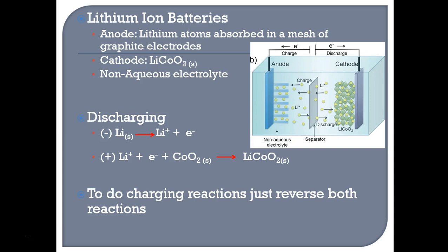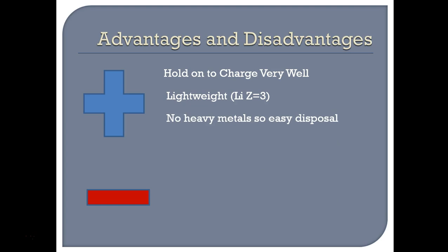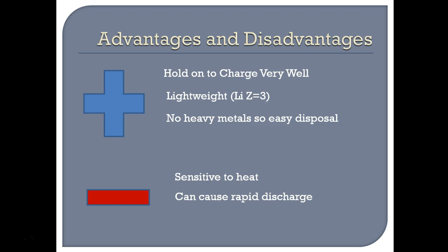To charge the battery, you just reverse those reactions. I haven't seen them ask you to produce these equations, but I have seen them ask about advantages and disadvantages. Advantages of a lithium-ion battery: they hold their charge very well, they're very lightweight because lithium has an atomic number of three, and they don't involve heavy metals so disposal is relatively easy. Disadvantages: they are sensitive to heat. If exposed to too much heat they can rapidly discharge or explode — which we saw with those Samsung Galaxy phones.